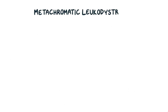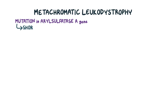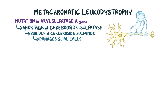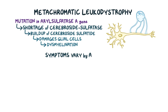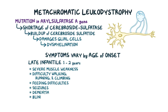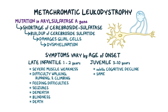Next up is metachromatic leukodystrophy, which is caused by a mutation in the aryl sulfatase A gene, and results in a shortage of cerebroside sulfatase. That leads to a buildup of cerebroside sulfatide, which damages the glial cells in the central and peripheral nervous systems, leading to dysmyelination. Symptoms vary by the age of onset. The late infantile form starts in children between ages 1 and 2, causing severe muscle weakness and difficulty walking, running, and climbing, progressing to feeding difficulties, seizures, dementia, and blindness — and can cause death if left untreated. The juvenile form starts in children between ages 3 and 10 and usually starts with subtle cognitive decline, like having difficulty in school, but causes the same symptoms as the infantile form, including death. Finally, the adult form starts in adulthood and can manifest as a psychiatric disorder or progressive dementia.